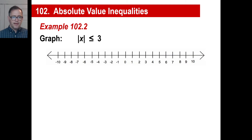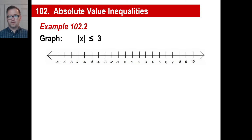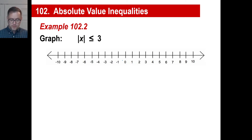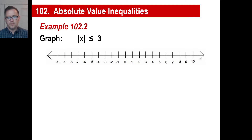Let's try another one. The absolute value of x is less than or equal to three. This is interesting — it's not greater than, it's less than. So we're going to have a kind of compartmentalized part here. Let's talk about what doesn't work first. The absolute value of four is not less than or equal to three. That doesn't work.